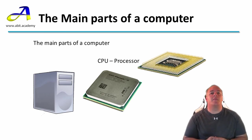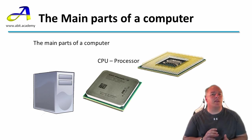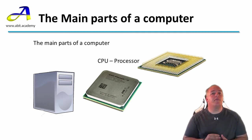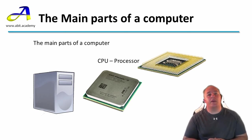Newer systems overcome this by including multiple cores within the CPU — it's essentially strapping multiple CPUs into the one chip. For example, a 2-core system is the equivalent of having two CPUs within the one chip, which allows two calculations to be done at the same time. It's common for newer laptops to have dual-core processors. The term processor is just shorthand for CPU.